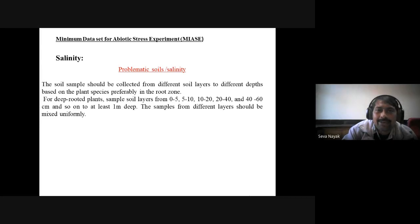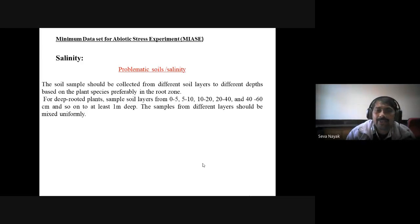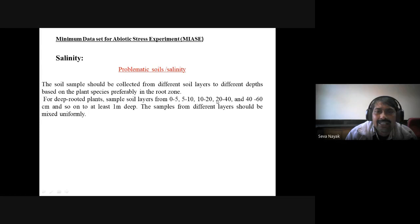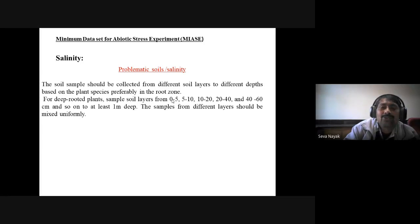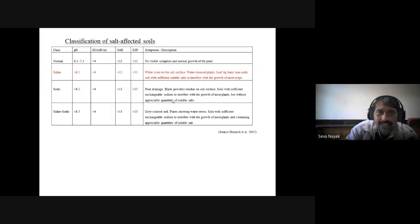For salinity experiments: the soil sample should be collected from different soil layers at different depths, based on the root depth of the crop species. Typically, sampling layers should be at least 0–5 cm, 5–10 cm, 10–20 cm, 20–40 cm, and 40–60 cm, up to at least one meter depth. Samples from different layers should be mixed thoroughly. We need to know the root length of our target crop and then determine what depth we should sample.